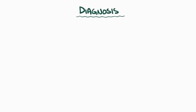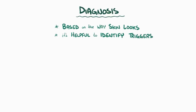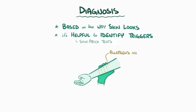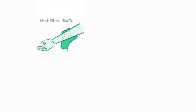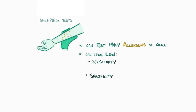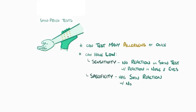The diagnosis of allergic rhinitis is generally based on simply the way the skin looks, and when possible, it's helpful to identify the allergic trigger so that a person can avoid them in the future. One way to identify an allergic trigger is with a skin prick test, where small drops of allergens are placed on the skin and then pricked into the skin with a tool, to see if there's evidence of an allergy like raised bumps or wheals, otherwise known as itchy red skin. These can test for a lot of allergens at once, but they can sometimes have low sensitivity as well as low specificity. Sometimes a person might have no allergic reaction on the skin test but have a localized allergic reaction affecting the nasal cavity and eyes — that's low sensitivity. Other times a person might have a skin reaction to something even though they don't normally have symptoms when they encounter an allergen in their everyday life, and that would be low specificity.